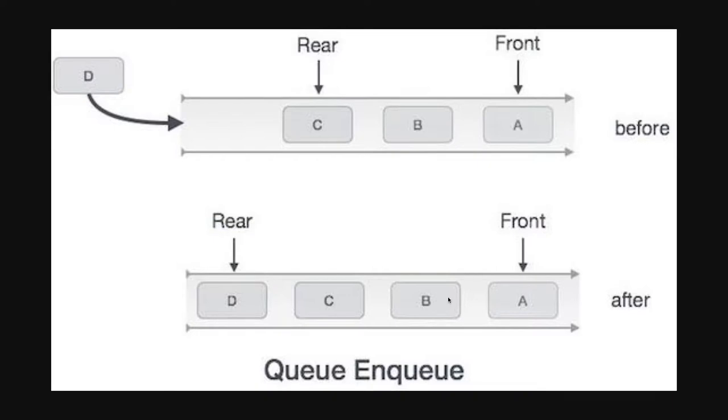Then again you dequeue the element B then the front will point to C and rear will point to D. You can enqueue dequeue until unless you have the elements. This is how the queue works.